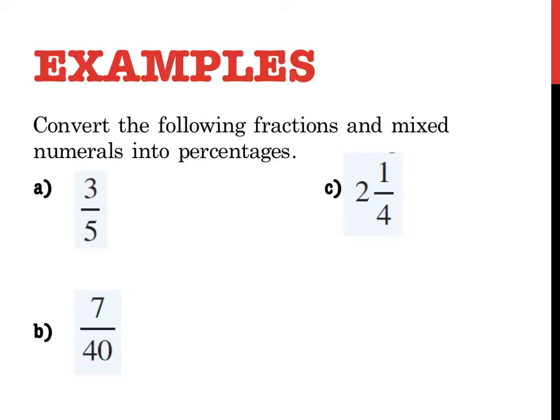Finally, convert the following fractions and mixed numerals to percentages. We need to multiply by 100%. Now, how can I do that without a calculator? Let me show you. 3 fifths as a percentage — it said I had to multiply it by 100%. I can write 100% as 100 over 1 with a percent sign. As soon as I do this, it becomes two fractions and I know how to multiply fractions. I can do this on paper.